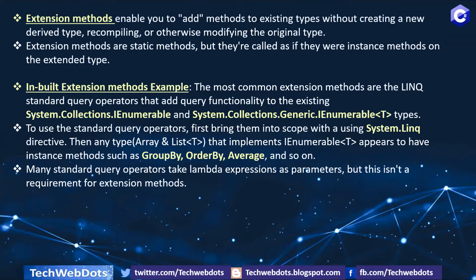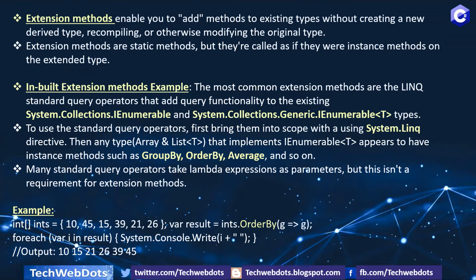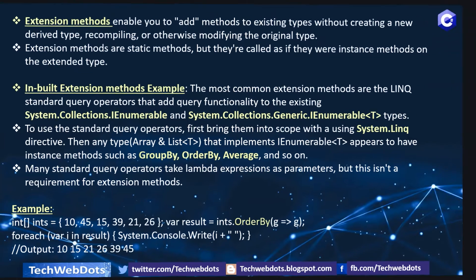GroupBy, OrderBy, and Average — we also call them operators. Many standard query operators take lambda expressions as parameters, but this is not a requirement for extension methods. For example, we have created an integer array here. You can see we have unordered numbers and we created a result variable, calling ints.OrderBy where we pass each element of our integer array. We then iterate through a foreach loop over the elements in the array and write them to the console. The output will be in ascending order.